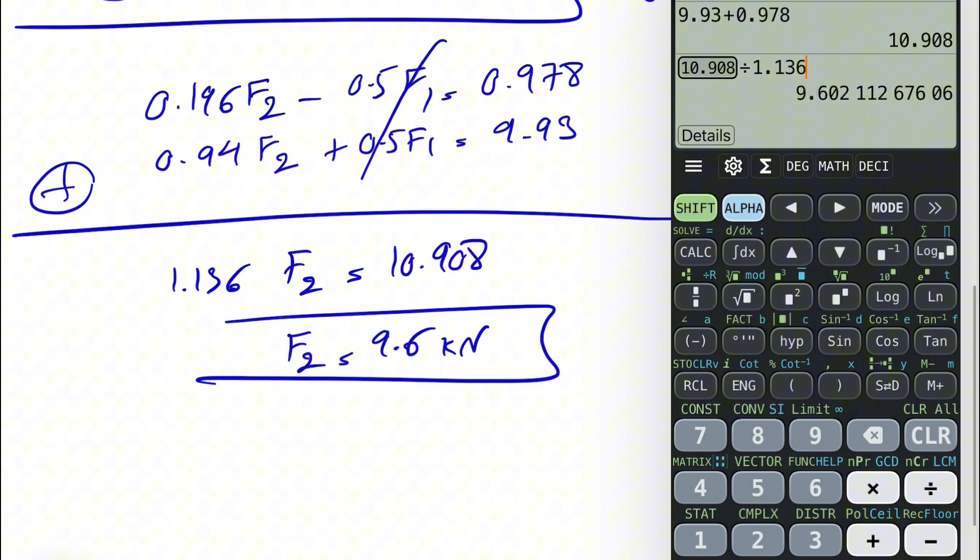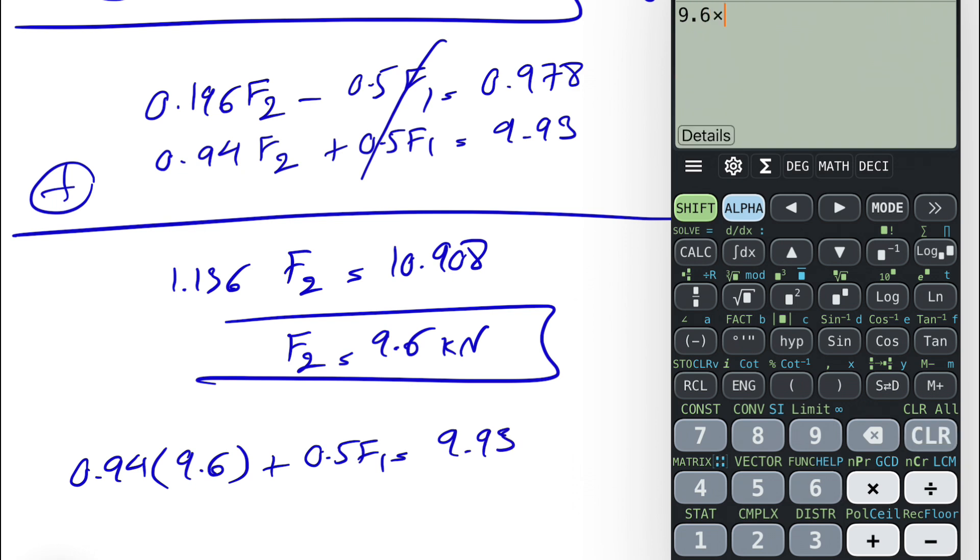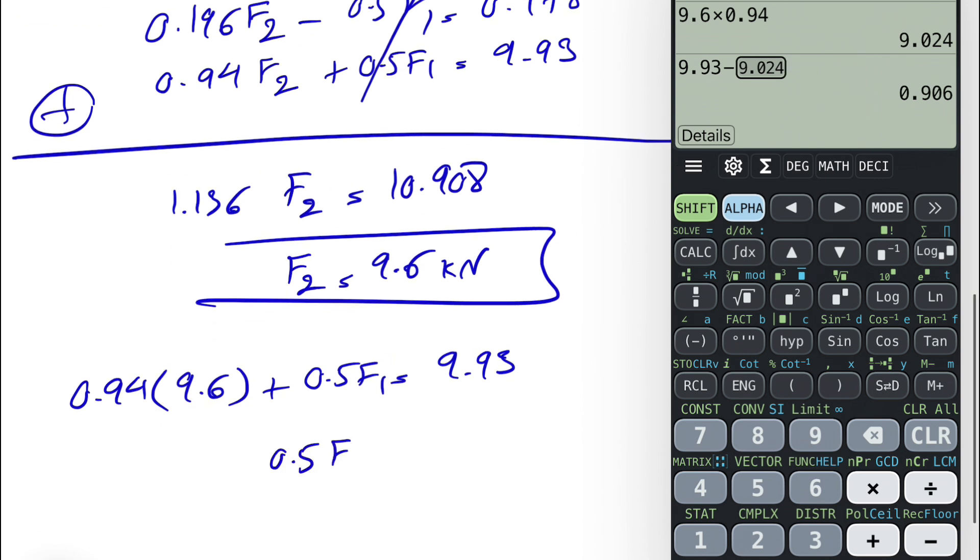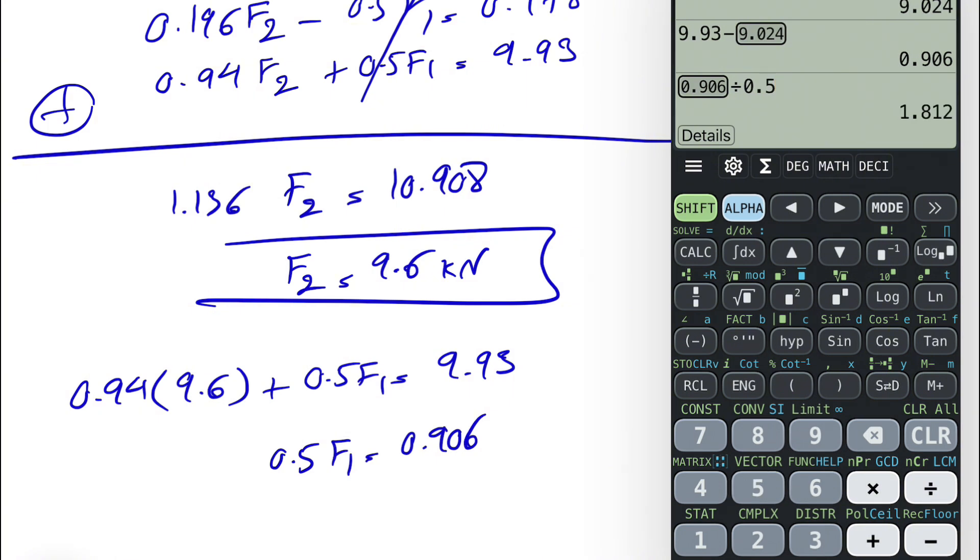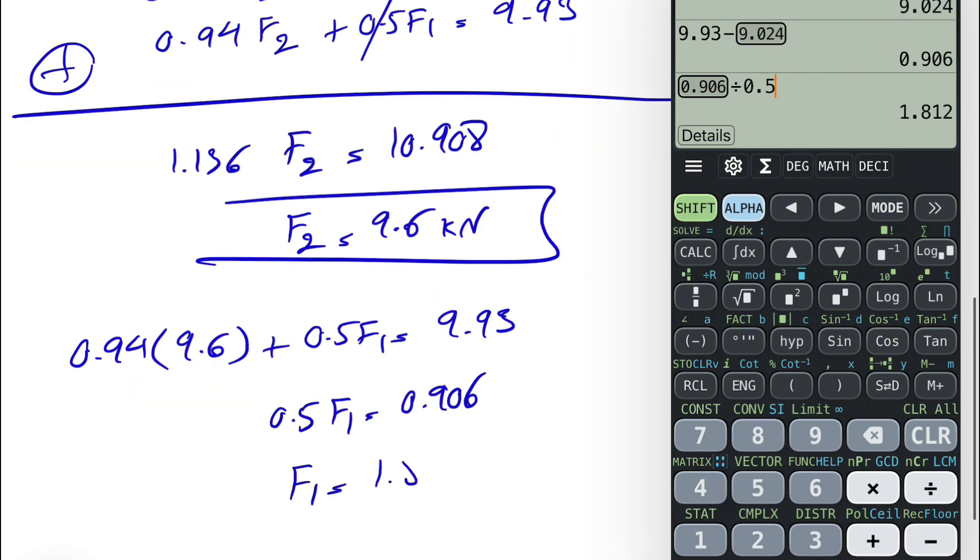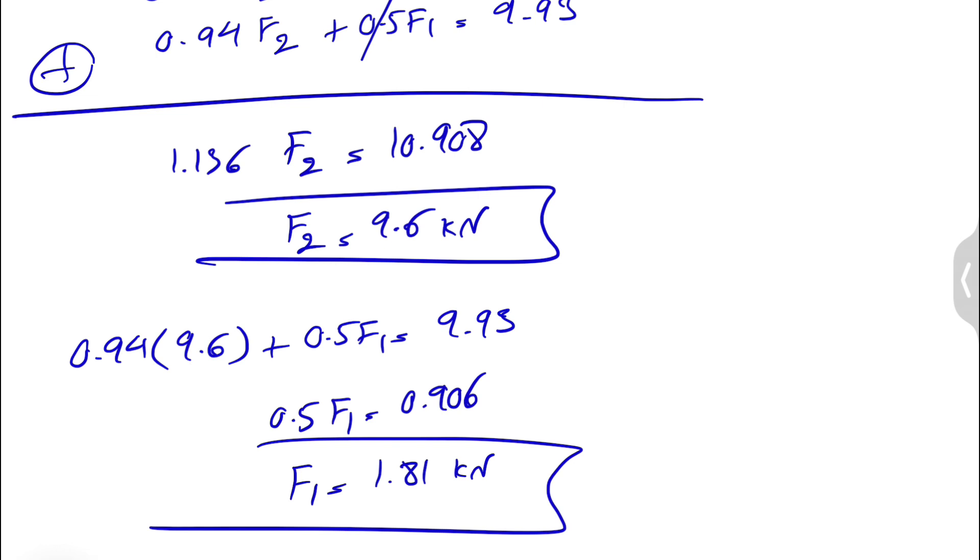And now that we have F2, we just have to put it in one of these equations. So 0.94, let's go with the second one, F2 9.6 plus 0.5 F1 is 9.93. So 9.6 times 0.94, and 9.93 minus answer is going to be 0.5 F1 is equal to 0.906. We're going to divide it by 0.5, and F1 will be 1.81 kilonewtons, and the final answer for this question.